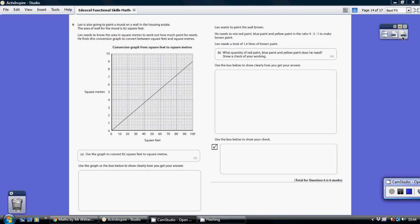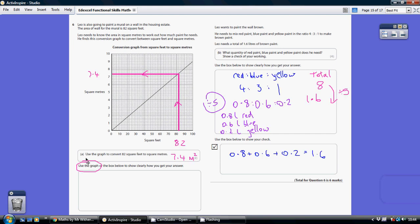Question 6. So we've got to use the graph to convert 82 square feet to square meters. We're starting off with 82 square feet. So here are the square feet, so we need to find 82.